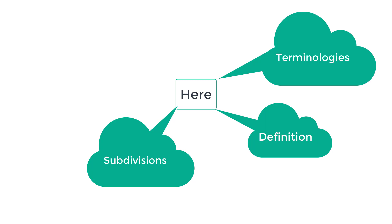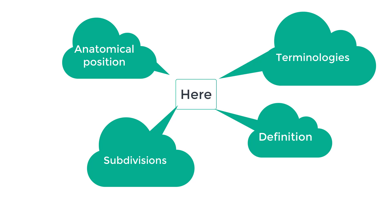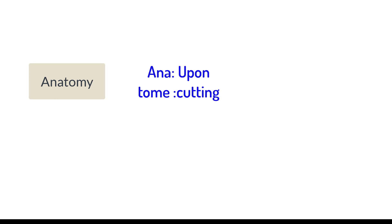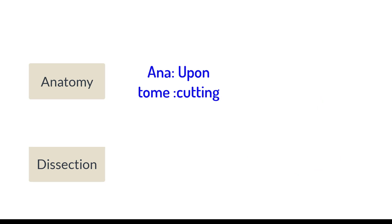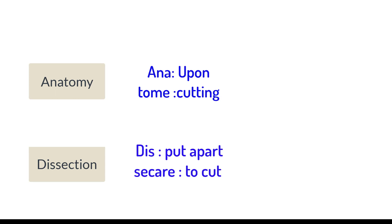We shall also define body positions, especially anatomical position. The meaning of anatomy is 'upon cutting' — 'ana' means upon, 'tome' means cutting. 'Anatome' is actually a Greek terminology coined by Aristotle 2,300 years ago. Just like that, dissection is a Latin terminology — 'dis' means put apart, 'secare' is to cut. Dissection is a technique.